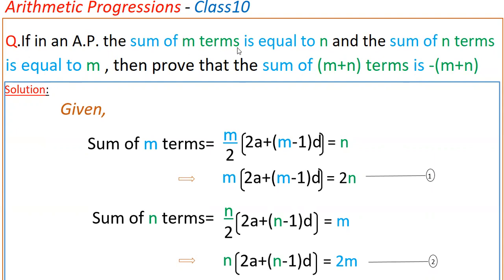So here, sum of m terms is equal to n. We know that sum of m terms is m by 2 into 2a plus m minus 1 into d, which is equal to n. This can be written as m into 2a plus m minus 1 into d is equal to 2n. This is the first equation.